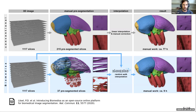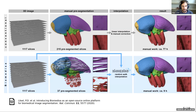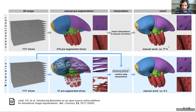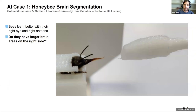In the Biomedisa publication, we compared conventional linear interpolation with the Biomedisa smart interpolation for a trigonopterous weevil. Instead of segmenting 215 slices, you only need to segment 37 slices, dropping the overall workload from 77 hours to only 9. You can also avoid typical interpolation artifacts and even segment very fine structures such as hair, which is not possible with linear interpolation.